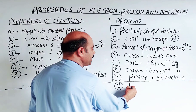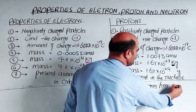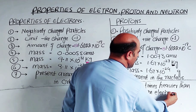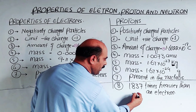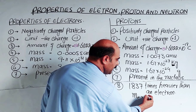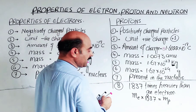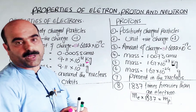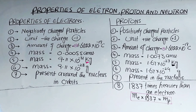The proton is present in the central portion of the atom because it is a heavy particle. It is heavier than the electron — 1837 times heavier than an electron. So the mass of electron multiplied by 1837 equals the mass of the proton. That completes the main properties of the proton.